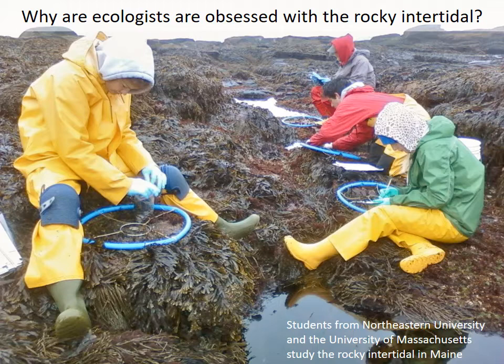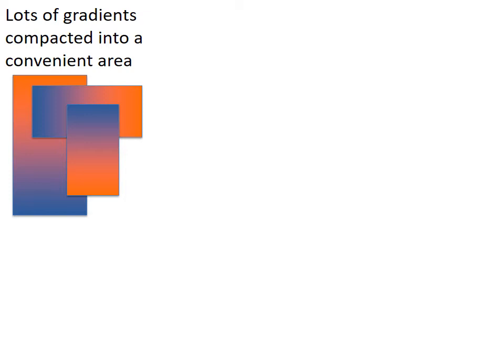Why are scientists so focused on studying the rocky intertidal? There are a number of reasons it's an ideal environment for marine ecological study. One reason is that there are a lot of environmental gradients compressed into a small area, between the high and the low tide line. You can see a radical transition from a terrestrial environment to a fully marine environment, and everything in between — differences in temperature, wave exposure, and all kinds of environmental gradients that can structure the communities of life.